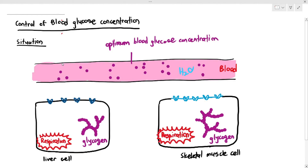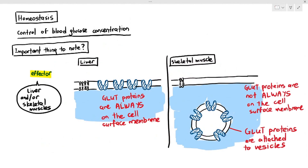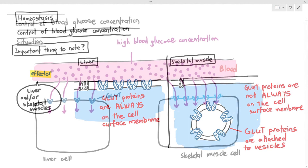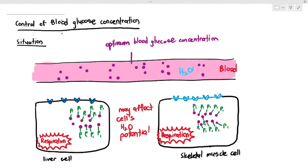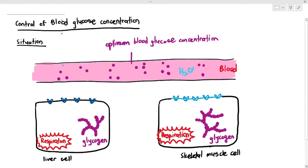These are the four important things to know about the metabolism of glucose before we talk about insulin and glucagon in the next video: we have GLUT proteins, which are glucose transport proteins that carry out facilitated diffusion; GLUT proteins in liver cells are constantly on the cell surface membrane, but in skeletal muscle cells they are not — they are sometimes at the vesicle membrane and can fuse to the cell surface depending on the situation; when glucose enters the cell, the cell will phosphorylate it to make sure it doesn't escape; and some glucose will be used in respiration while most excess glucose will be converted into glycogen. If you understand this, we are ready for the next video on what insulin does.